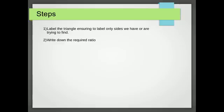So what are the steps we go through in solving a type 1 problem? Well, first of all we label the triangle, and we only label the sides that we have and the ones we're trying to find out. We then write down the ratio that has those two sides, they'll only be one.